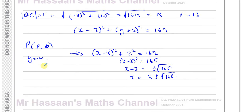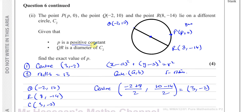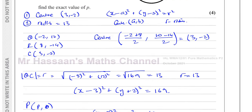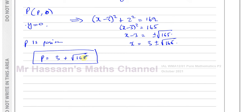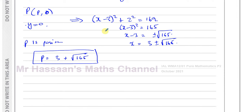Now, the question states that p is a positive constant. Since 3 minus root 165 would be negative, we discard that solution. Therefore p equals 3 plus the square root of 165. That is the exact value of p — unrounded, written in surd form. The square root of 165 doesn't simplify further, so 3 plus root 165 is the exact simplified surd form of the answer.